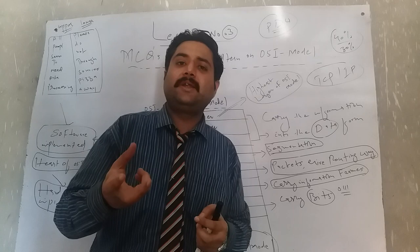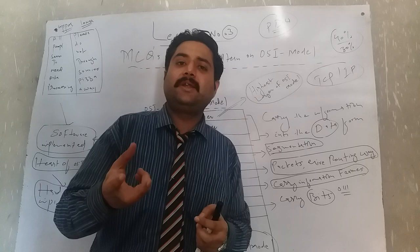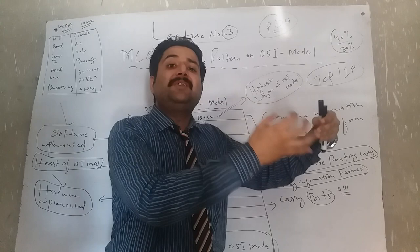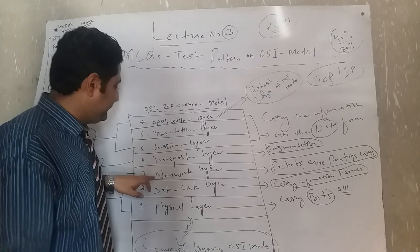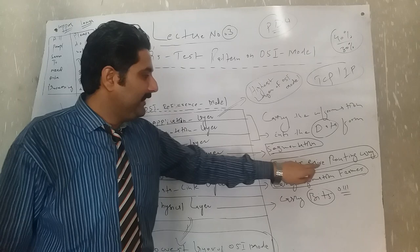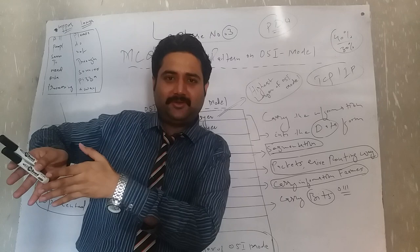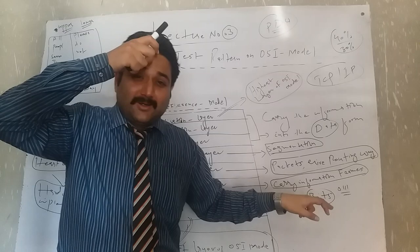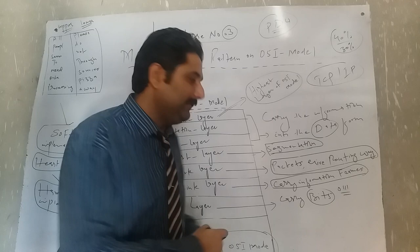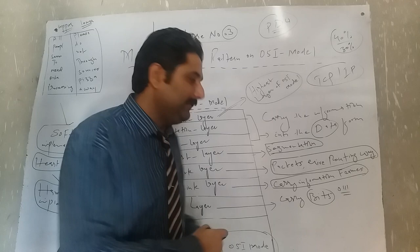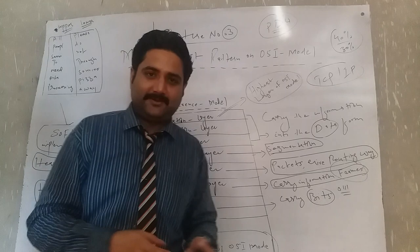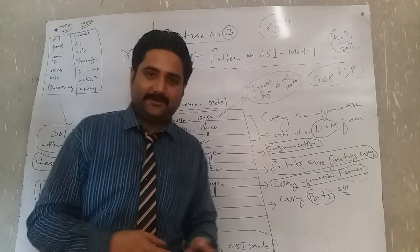Segmentation means when you download any file, that file comes in the form of little pieces — that is called segmentation. The Network layer carries information in the form of packets and provides routing — it gives the real path for data to travel. The Data Link layer carries information in the form of frames, and the Physical layer carries information in the form of bits.